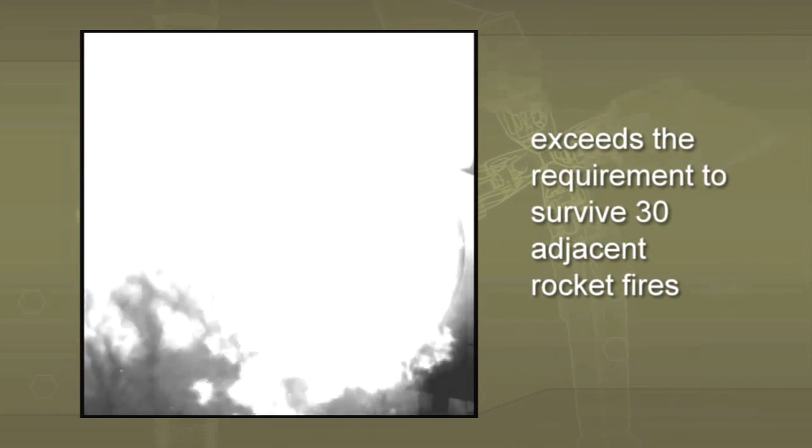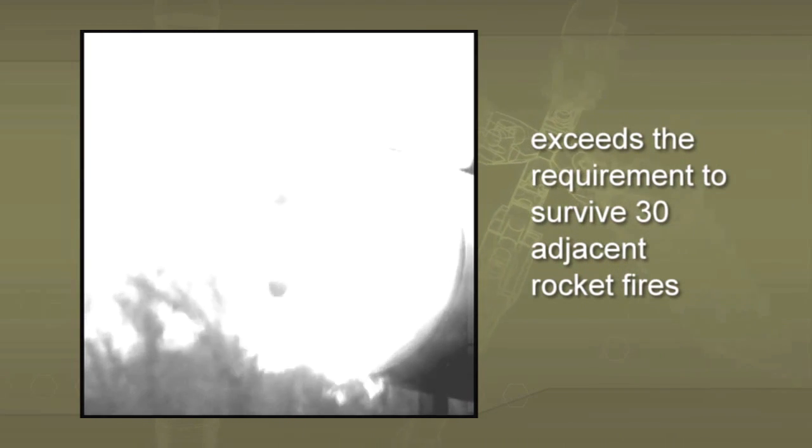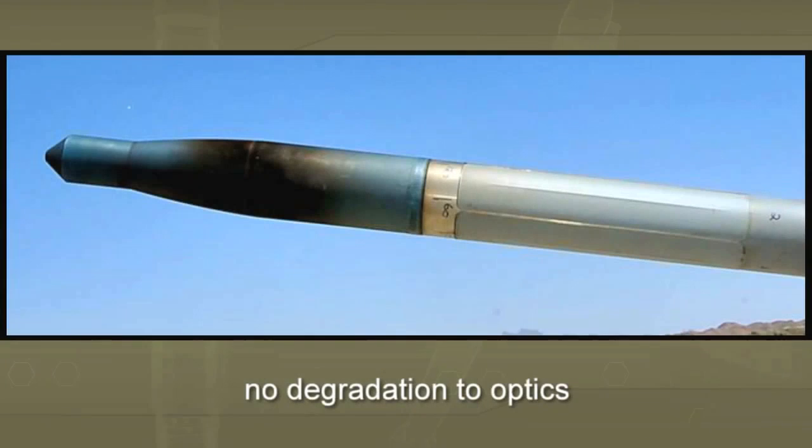The mid-body guidance sections are fully enclosed in the launcher and are protected from the fire, smoke, and debris from the fired rocket in the center. Upon removal from the launcher, one can see how the APKWS guided rocket's optics are protected from the effects of adjacent rocket fire.